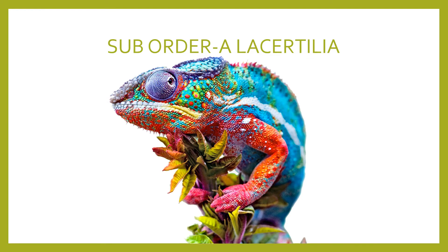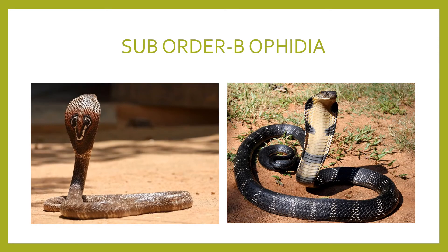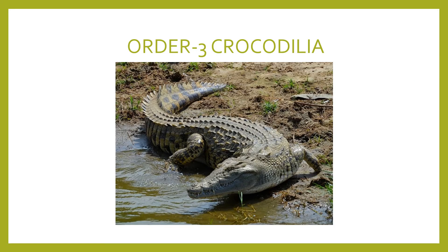Male possesses paired copulatory organs. The order Squamata is divided into two suborders. The first one is Lacertilia, which includes lizards and chameleons. The second suborder is Ophidia, which includes various types of snakes. The next order is Crocodylia. These animals have short, powerful, and rapid limbs.